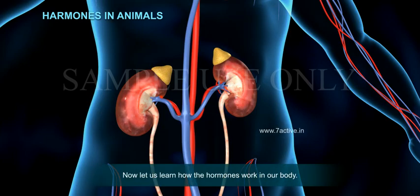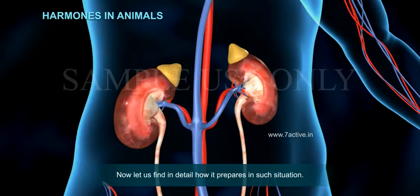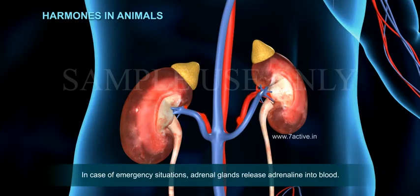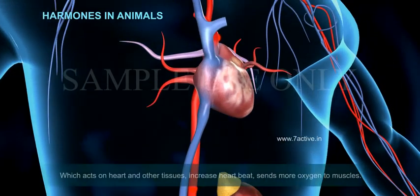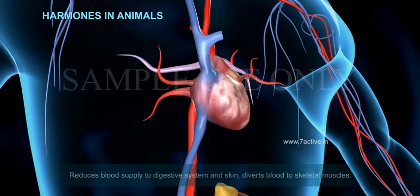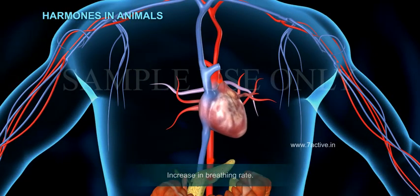Now let us learn how hormones work in our body. For example, we have learned that the adrenaline hormone acts in preparing the body to deal with emergencies. In case of emergency situations, the adrenal glands release adrenaline into the blood, which acts on the heart and other tissues: it increases heart beat, sends more oxygen to muscles, reduces blood supply to the digestive system and skin, diverts blood to skeletal muscles, and increases the breathing rate.